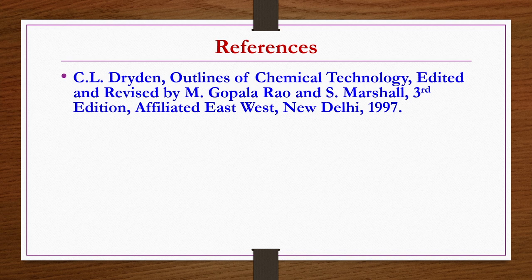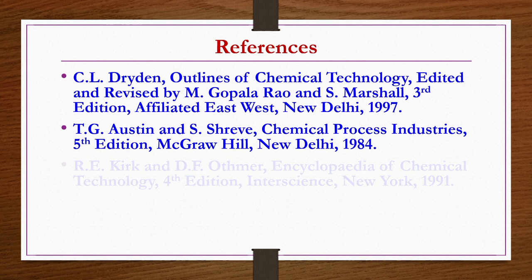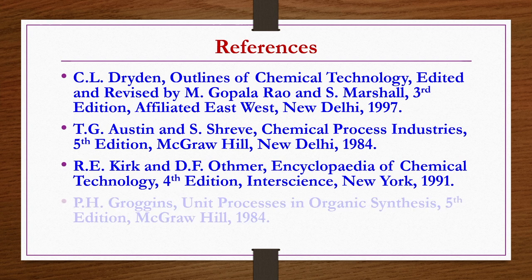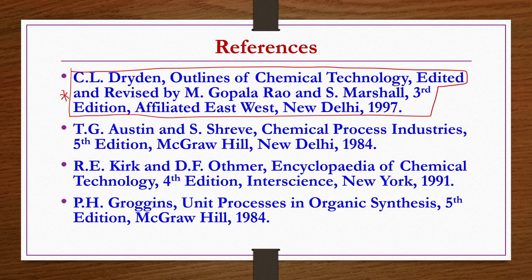References for today's lecture: Outlines of Chemical Technology by Dryden, edited and revised by Gopalrao and Marshall, 3rd edition; Chemical Process Industries by Austen and Shreev, 5th edition; Encyclopedia of Chemical Technology by Kirk and Atmar, 4th edition; and Unit Processes in Organic Synthesis by Groggins, 5th edition. Most of today's lecture notes are prepared from Outlines of Chemical Technology by Dryden. Thank you.